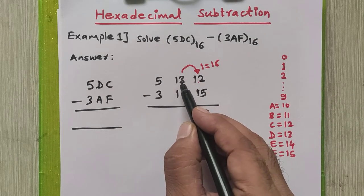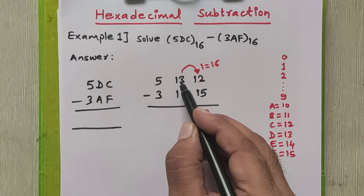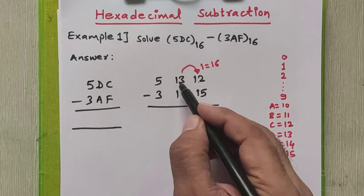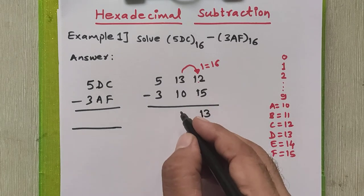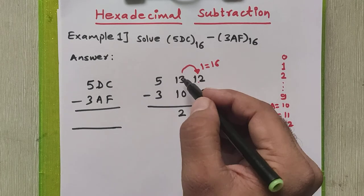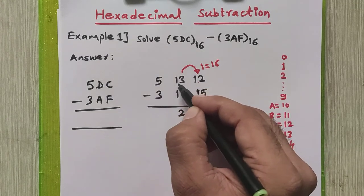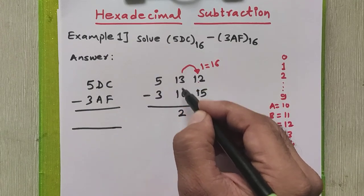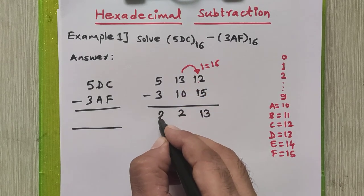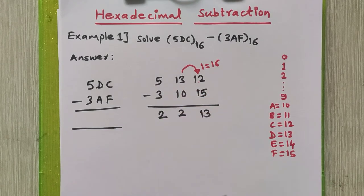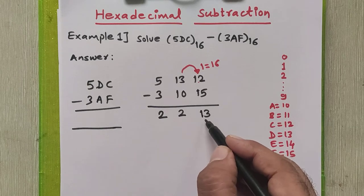Because we took a borrow, the remaining digit in the next position becomes 12. So 12 minus 10 equals 2. Then 5 minus 3 equals 2. All results are valid hexadecimal digits. To represent 13, we use D.